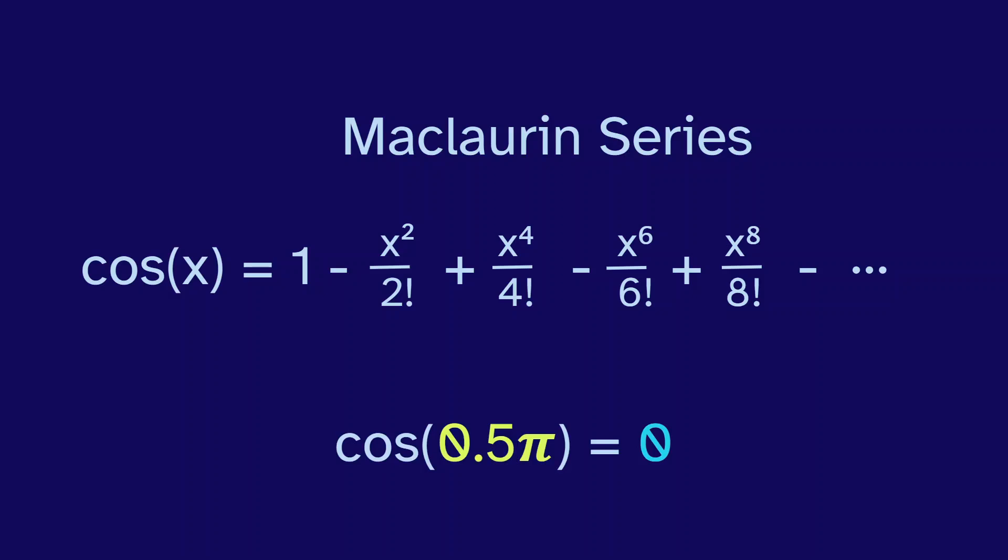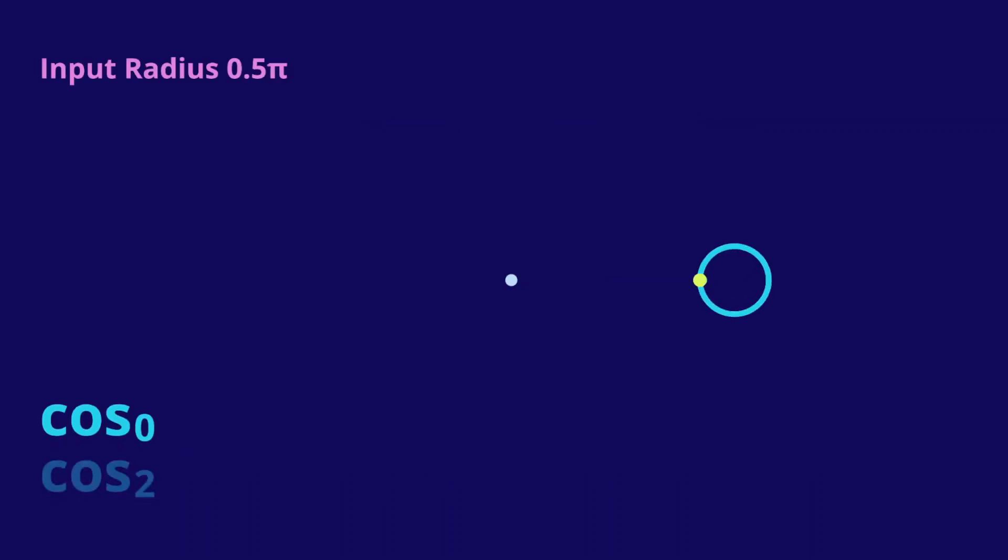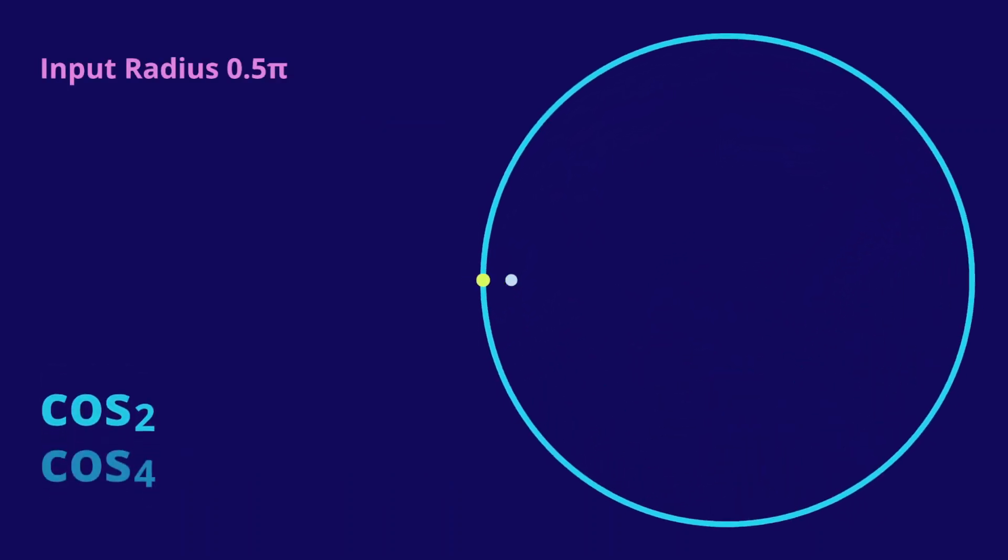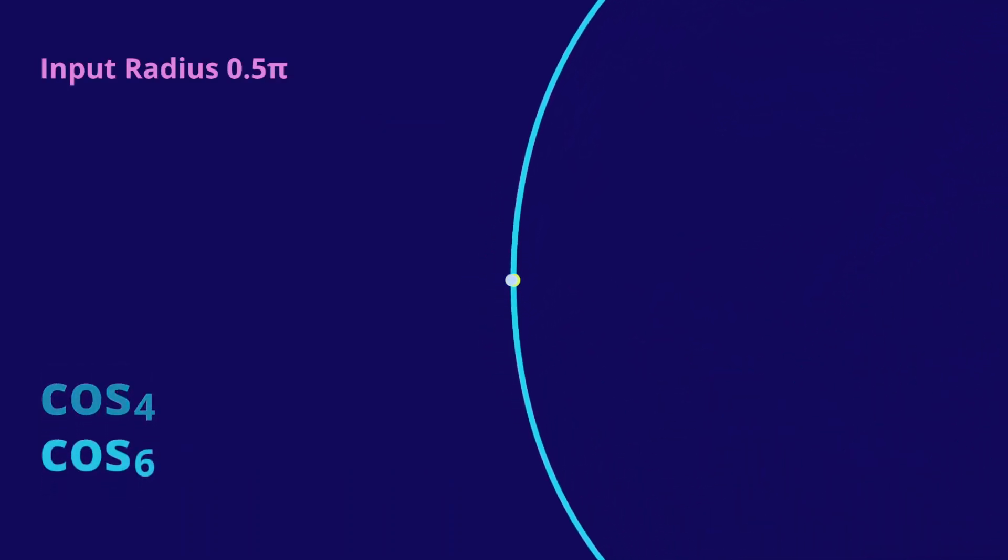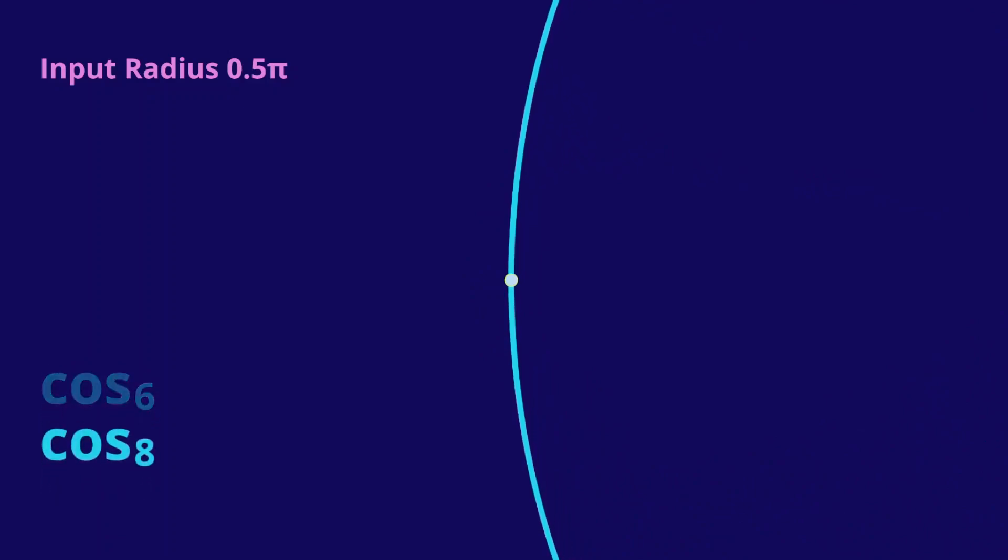Just like with sine, we see the point approaches 0. But it's only one point, not two.